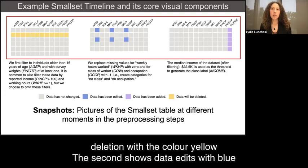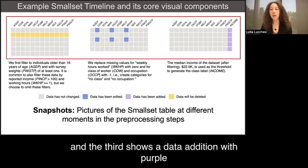The first shows a data deletion with the color yellow, the second shows data edits with blue, and the third shows a data addition with purple.